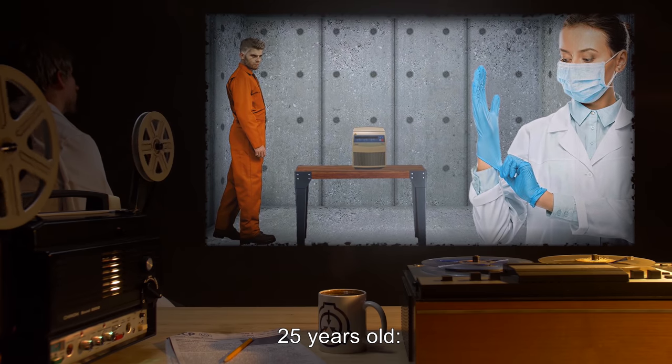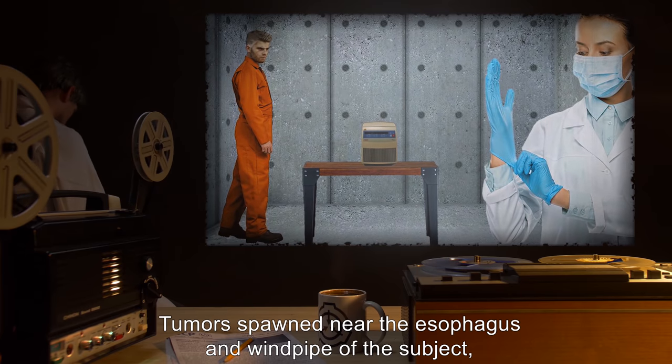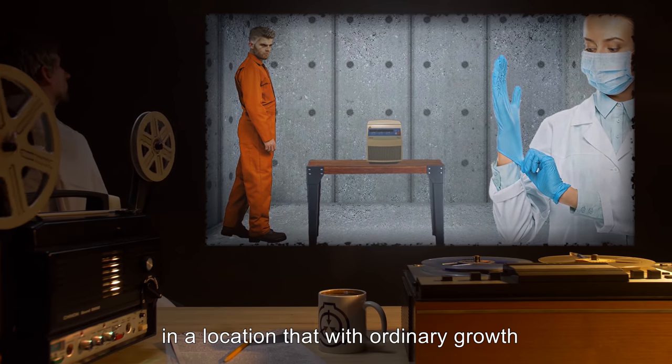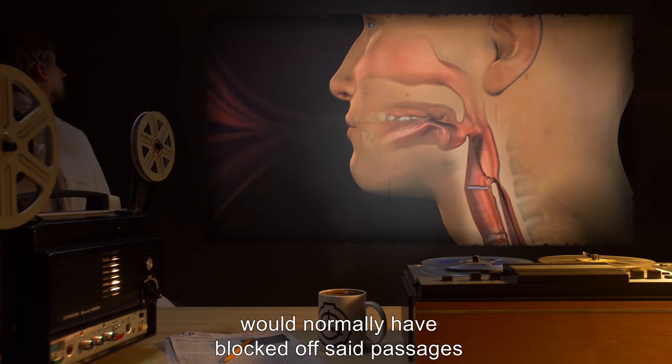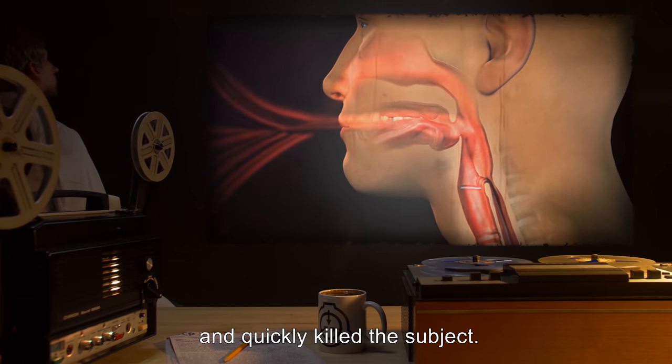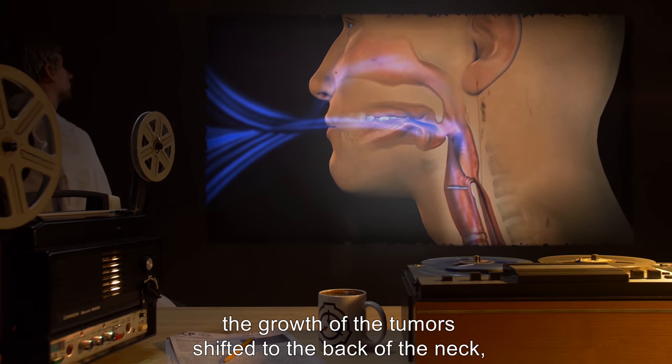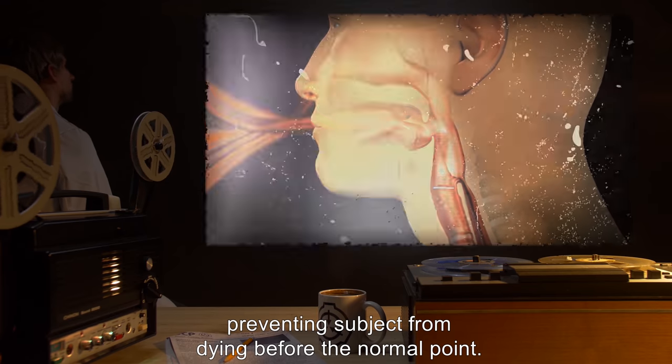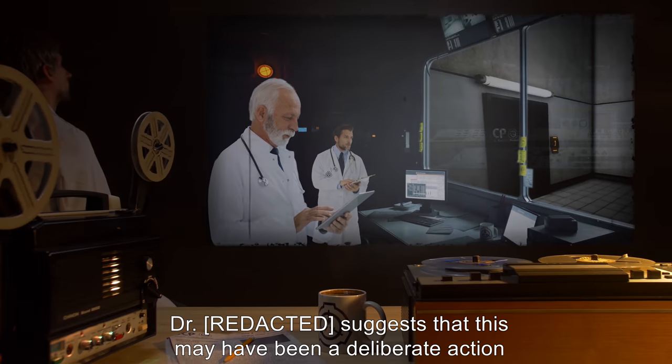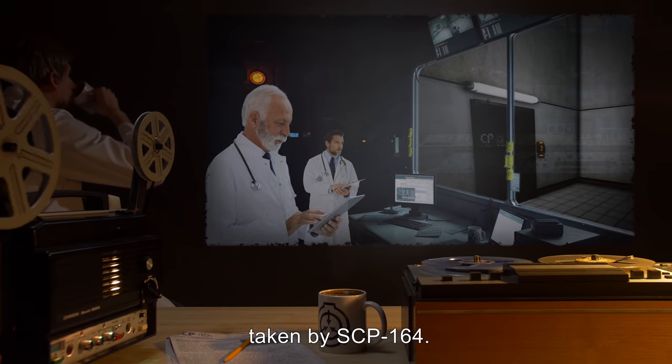Male D-Class, 25 years old: Tumors spawned near the esophagus and windpipe of the subject, in a location that with ordinary growth would normally have blocked off said passages and quickly killed the subject. Instead, the growth of the tumors shifted to the back of the neck, preventing the subject from dying before the normal point. Doctors suggest that this may have been a deliberate action taken by SCP-164.